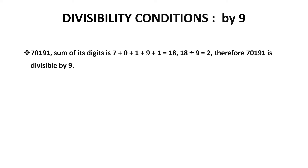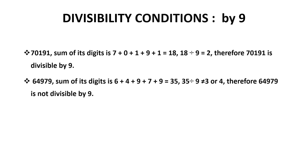The number 70191 — what is the sum of its digits? The digits sum up to 18. 18 can be divided by 9, therefore the number 70191 is divisible by 9.